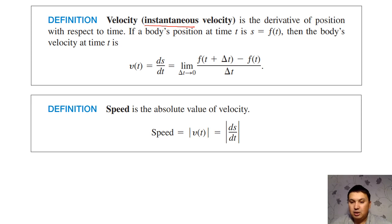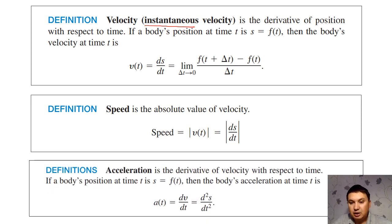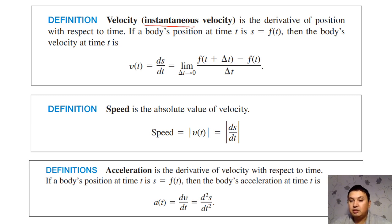So in particular, if the car's velocity is minus five, then the speed would be five. If the velocity is five, the speed would also be five. Acceleration is the instantaneous rate of change of velocity with respect to time — it is the derivative of the velocity. Since velocity is the derivative of the displacement, acceleration can also be found as the second derivative of displacement.